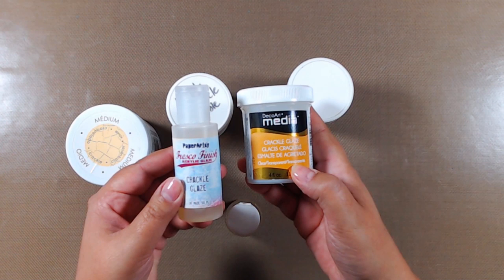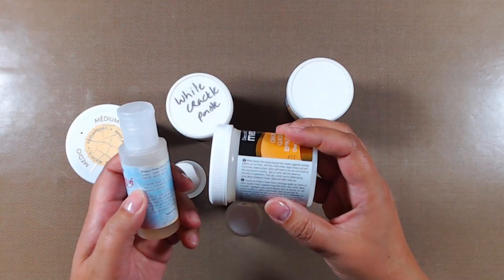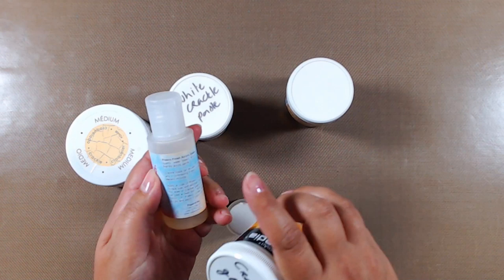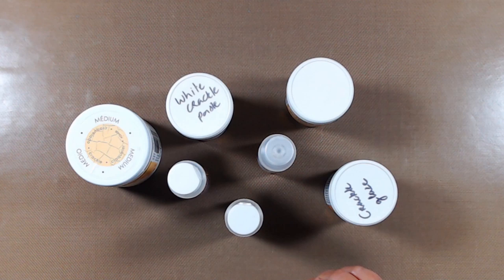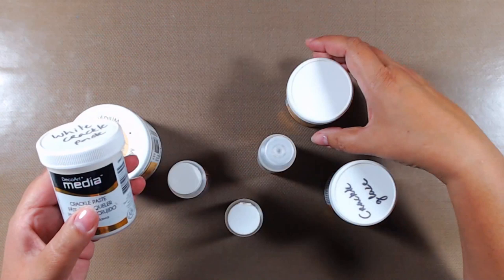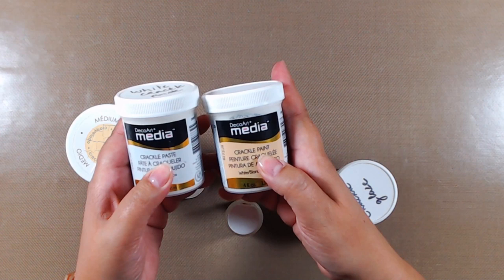These are both crackle glazes, and that is where it starts to be confusing. Because the one on the right, if you start looking at the description, says that it's a top layer, so it's a finishing layer, while the one on the left says that it has to go in between two layers of paint. That means that one contains both the components to create that glitch happening, while the other one only has the one, and then you have to combine it so that you have that glitch happening.